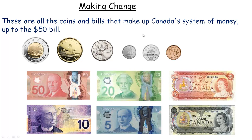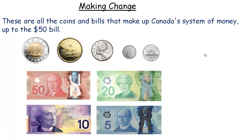This tutorial is about making change. I'm from Canada so I'm using our money system. If you're from a different country it might look similar or very different. These are all the coins and bills that make up Canada's money system up to the $50 bill. I've included a couple things we no longer have — the $1 and $2 bills were replaced by the loonie and the toonie, and the penny, the one cent, we don't have anymore.